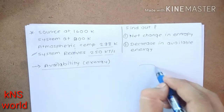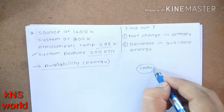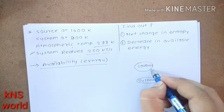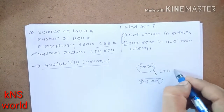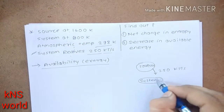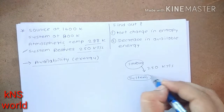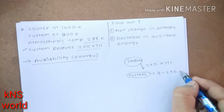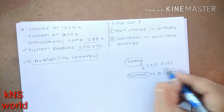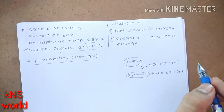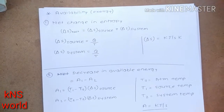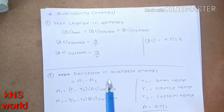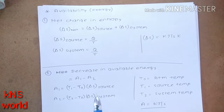The source is giving 250 kJ/s of heat to the system. When the system is absorbing, Q is taken as positive 250. When the source is giving 250, we take it as negative. This is the most important sign convention to remember for solving this problem.